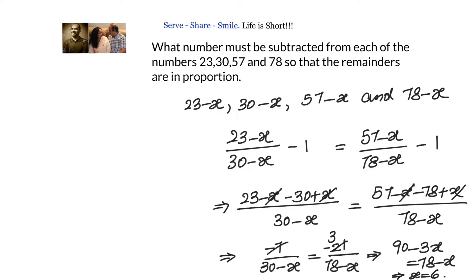Now let's observe what we did to derive a shortcut. In the numerator we subtracted the first number from the second (23 from 30) and the third from the fourth (57 from 78). The denominator uses the second and fourth numbers, 30 and 78. Cross-multiplication then multiplies the differences with those denominators.